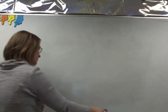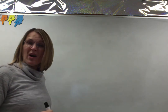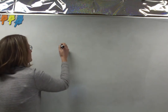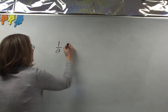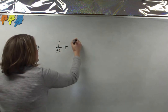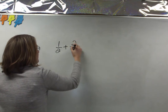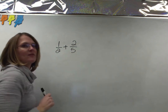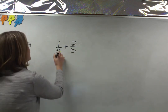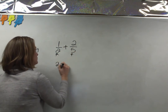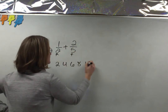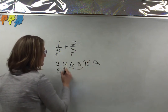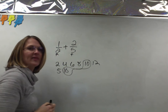Let's do another one because our numerators are not always going to be one. Say we have one-half plus two-fifths. I need to find the least common multiple for two and five. Multiples of two: 2, 4, 6, 8, 10. Multiples of five: 5, 10. I don't have to go any further — I already found a number they have in common: ten.